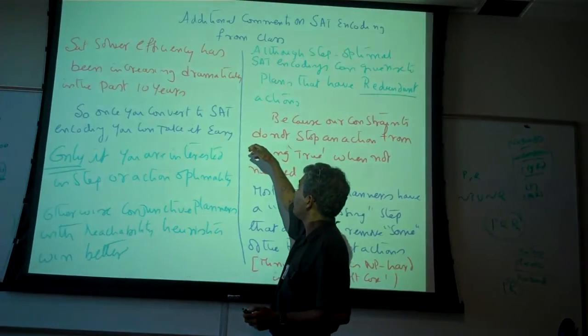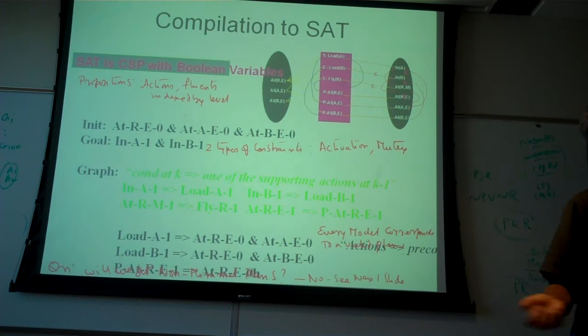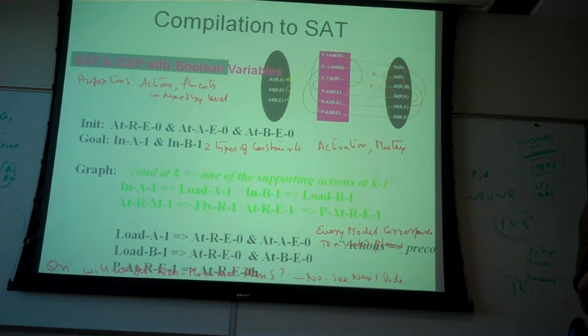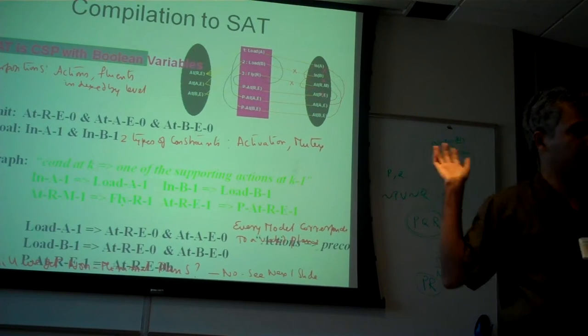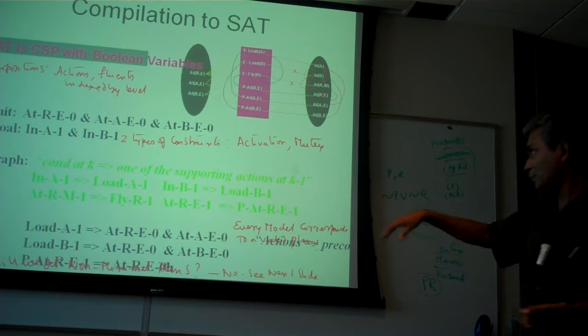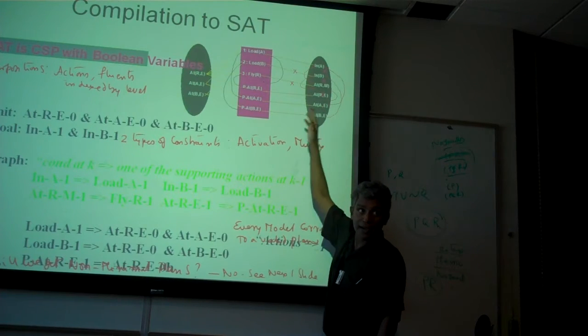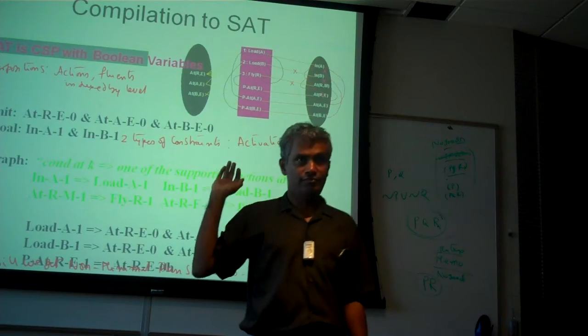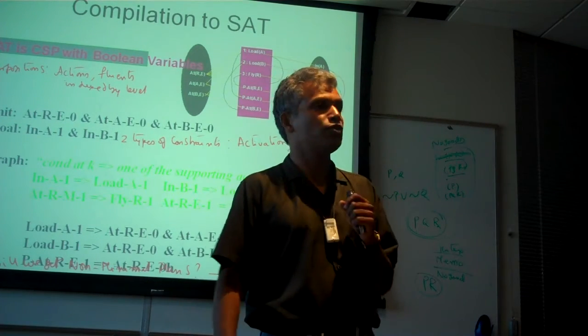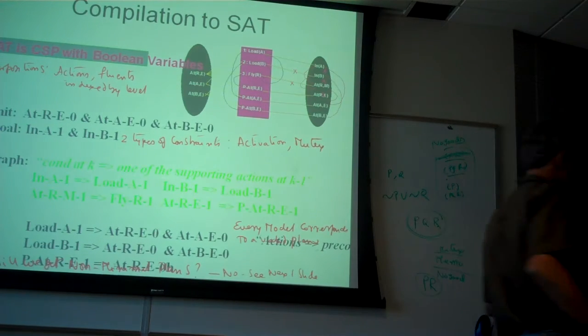They basically considered a version of the backward proof called explanatory frame axiom-based proof that just corresponds exactly what I wrote there. These are explanatory frame axioms in the sense you are explaining why this is true by saying a disjunction of actions giving it must have been true in the previous level. That's the only way something becomes true in the current level.